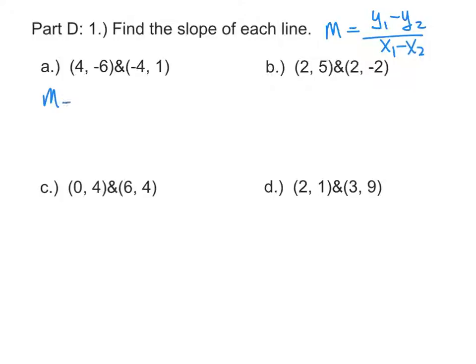So to find this slope I'm going to take the y's and subtract them on top: negative 6 minus 1, and then the x's on the bottom: 4 minus negative 4. Don't get tripped up by subtracting a negative, you know what to do.